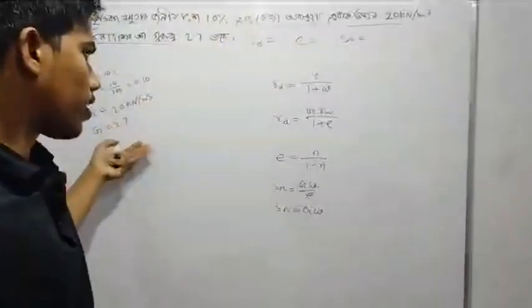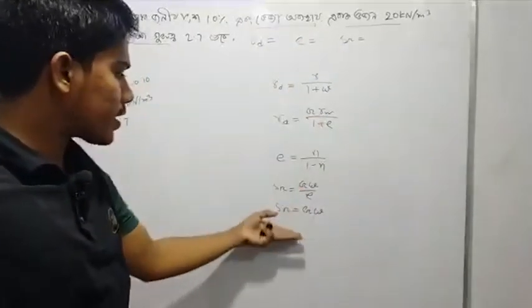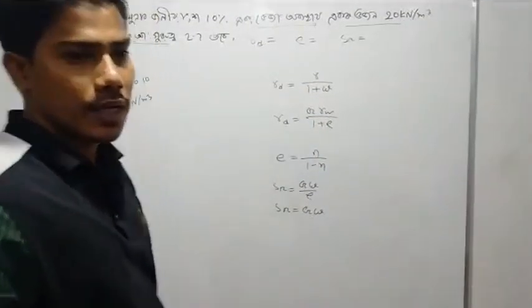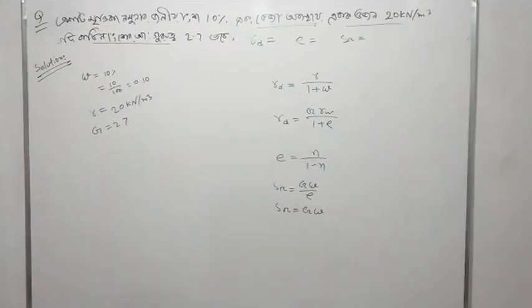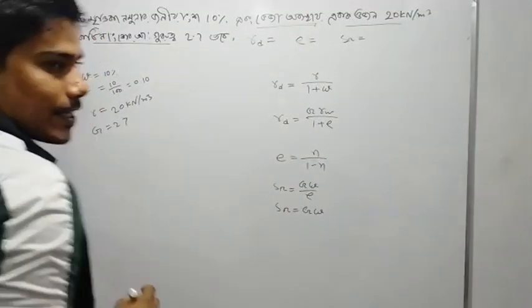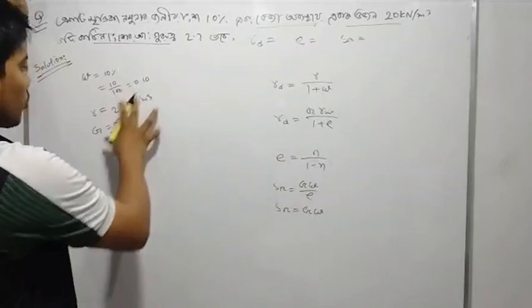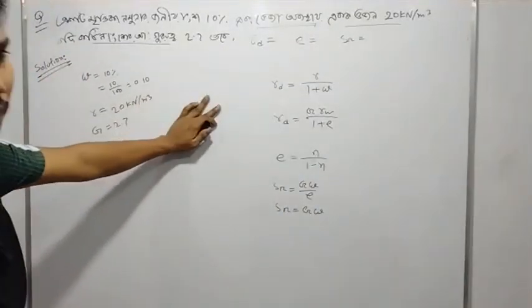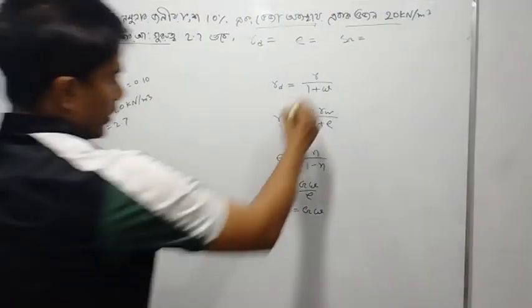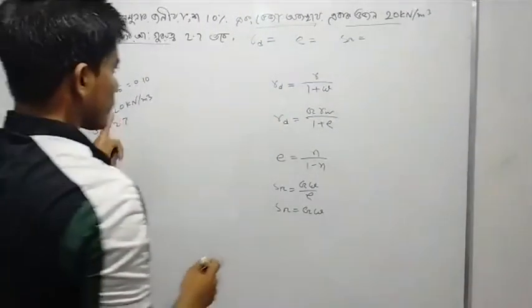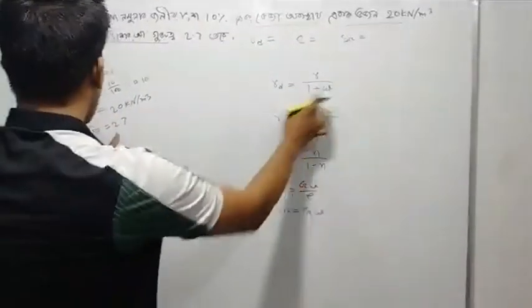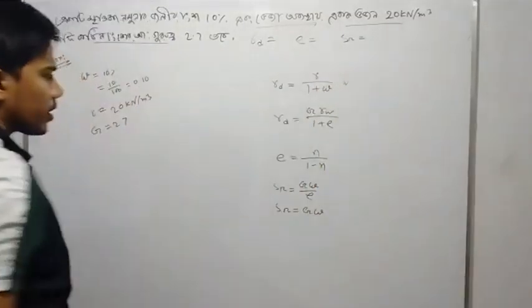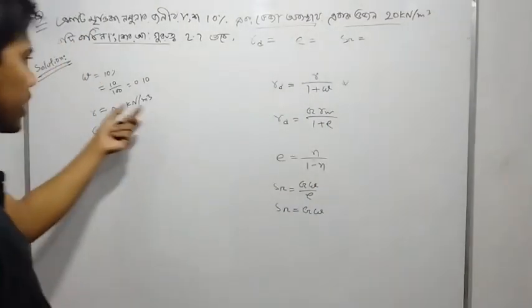And Sr is equal to G times omega divided by e. These are the basic formulas you need to know. Write down these formulas and apply them. You should know all the basic formulas — write them down, then apply whichever formula is needed at the relevant point.